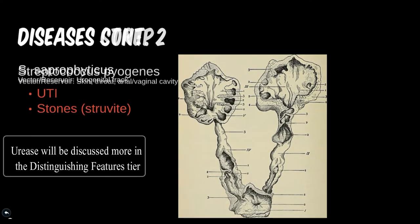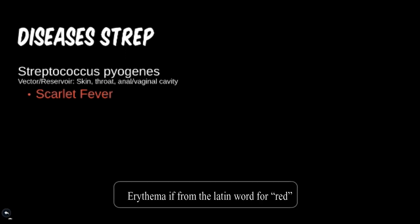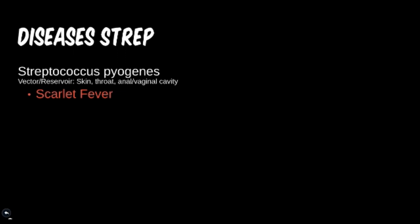Streptococcus pyogenes is also a very important and versatile microbe. Like staph aureus, it is found in the skin and throat, so there will be a lot of overlap in diseases and presentation. First, we have scarlet fever, which is classified as a systemic infection generally seen in children. Presentations include swollen red tongue, general sick symptoms, and erythematous dry skin — the skin texture is dry and likened to sandpaper. The scarlet fever toxin is called exotoxin A, leading to the inflammatory response and sequelae seen.